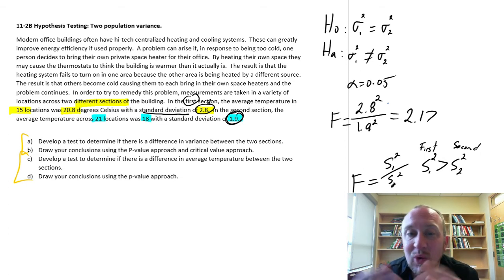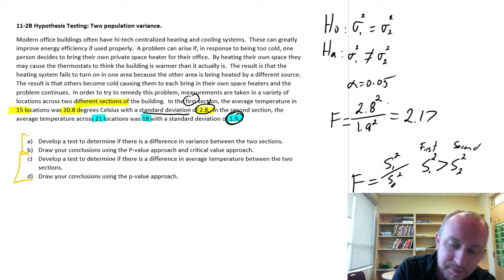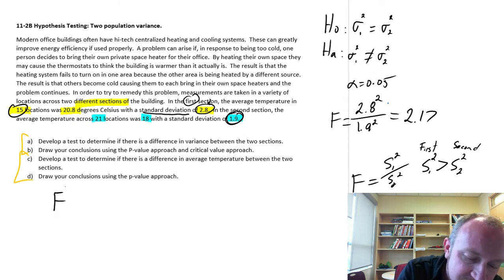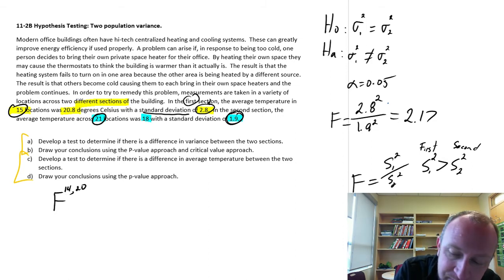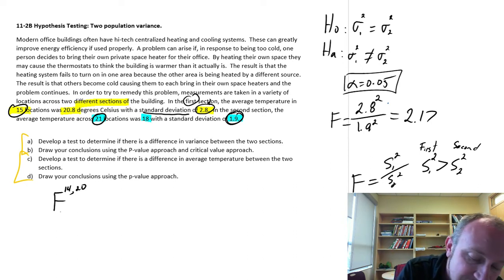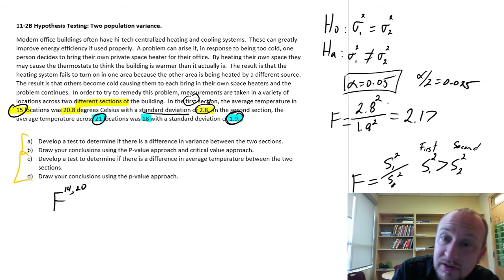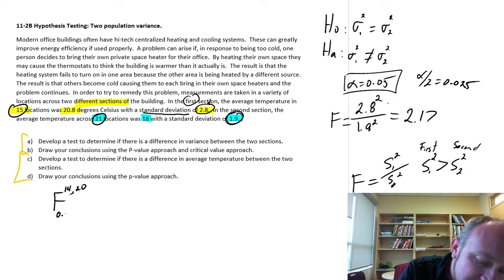Now we need to know what distribution we're working with. Let's find the critical value. I have in the numerator 15 observations, so 14 degrees of freedom in the numerator. In the denominator, I have 21 locations, so that's 20 degrees of freedom in the denominator. And we'll perform this test at the alpha equals 0.05 level of significance. This is a two-tail test, so alpha divided by 2 is equal to 0.025. So we have to take that into account.